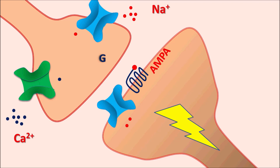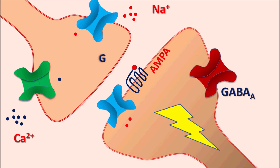But this excitatory response is controlled by another type of ion channels — the GABA-gated chloride channels. When GABA binds to these GABA-gated chloride channels, chloride ions can enter into the cell, producing inhibition and thereby controlling the excitatory response. In this way, ion channels can produce either excitation or inhibition.